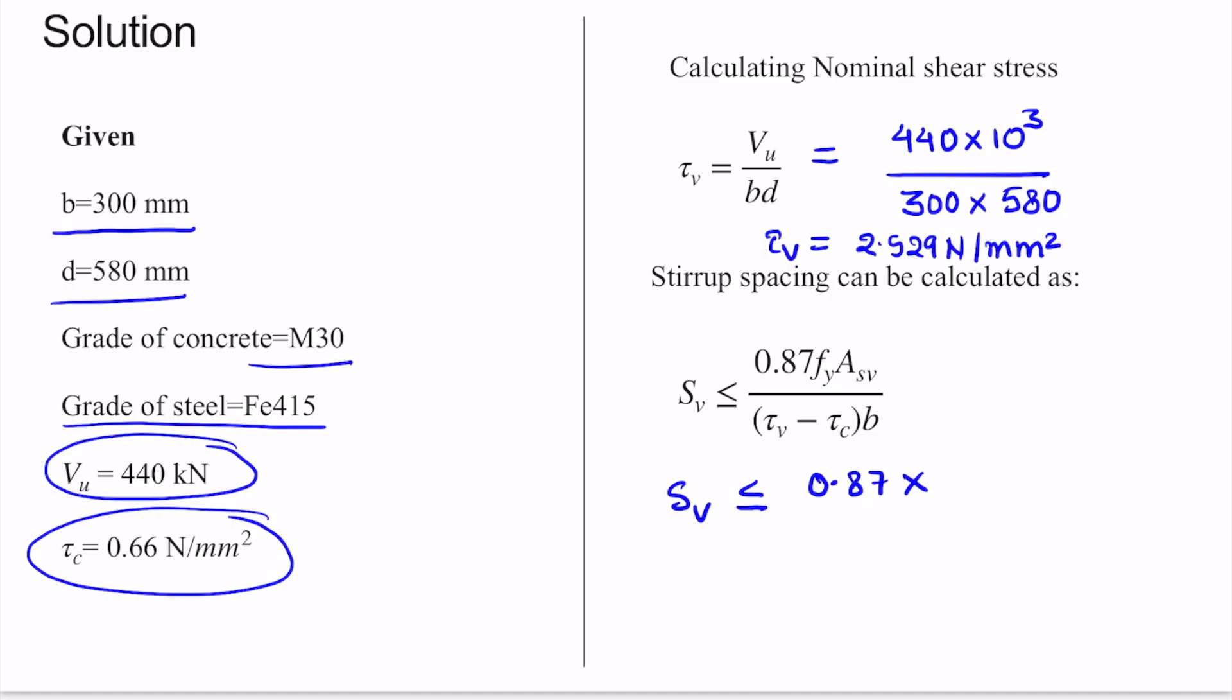The yield strength f_y is 415 in this case. The value of A_sv is the area of stirrups. The stirrup is a two-legged 10 mm diameter stirrup, so twice of π/4 × diameter², which is 10 in this case.